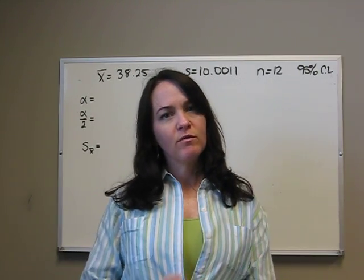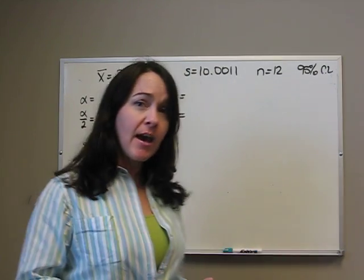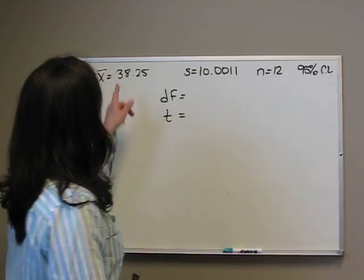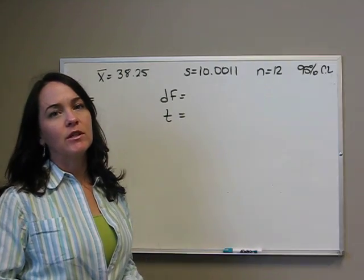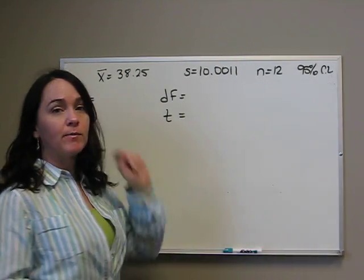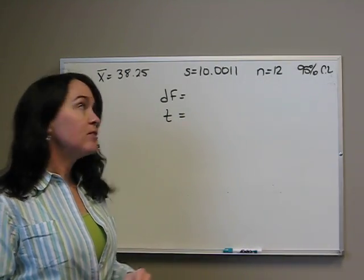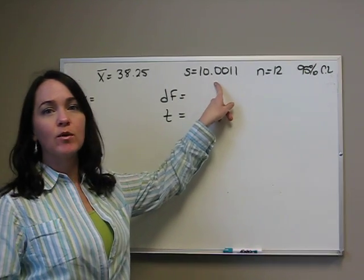Based on the sample of 12 babies, we found that the average age was 38.25 when they first started crawling. We use x̄ with a standard deviation of 10.0011.